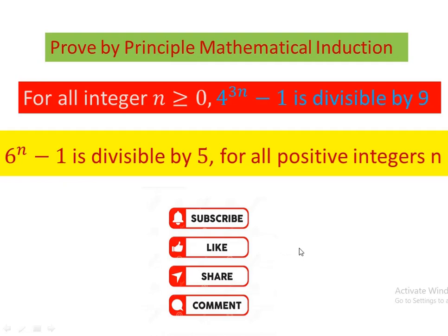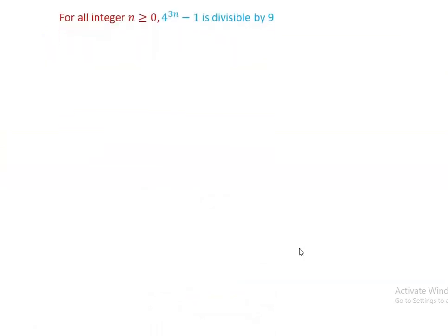Now let us restart from question number 1. For all integers n greater than or equal to 0, 4 to the power of 3n minus 1 is divisible by 9. We can prove this using the principle of mathematical induction. Step 1: for n equal to 0, we have 4 to the power of 3 times 0 minus 1, and 3 times 0 is 0, so 4 to the power of 0 is 1.